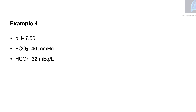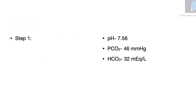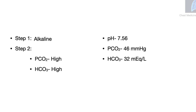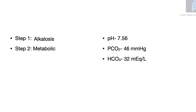Example 4: pH 7.56, pCO2 46 mmHg, and bicarbonate 32 mEq per liter. Step 1: This is an alkaline pH. Step 2: Both the carbon dioxide and bicarbonate are high. Looking at the pictorial representation, the pH is on the alkaline side, the high pCO2 is on the acidic side, and the bicarbonate is on the alkaline side. So the alkalinity is caused by the increase in bicarbonate, and therefore this is a metabolic alkalosis.